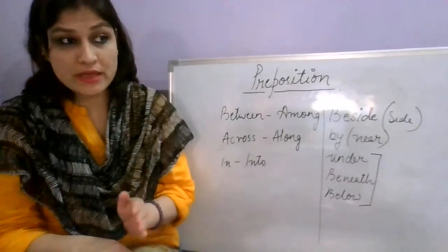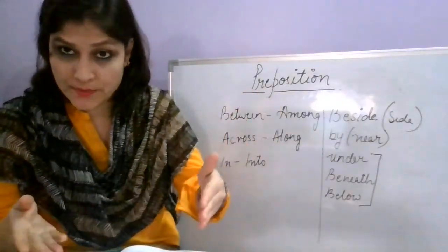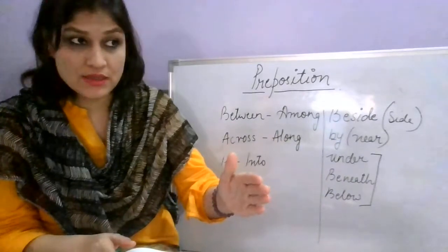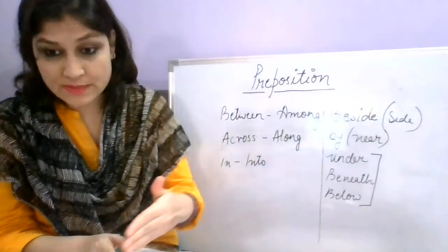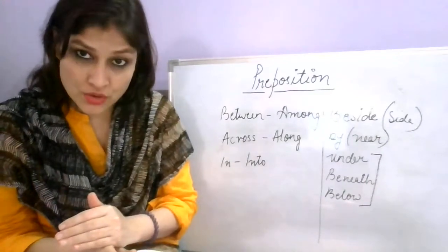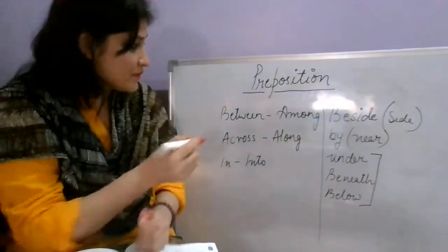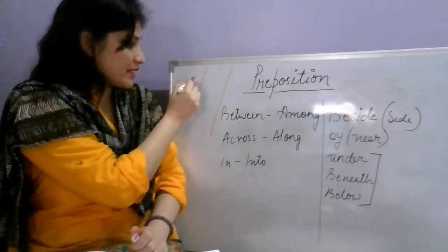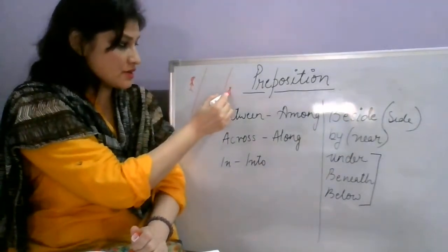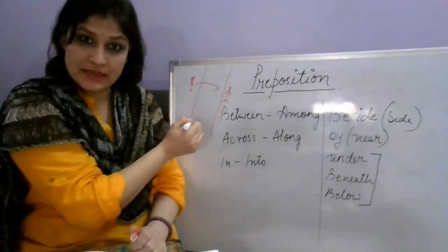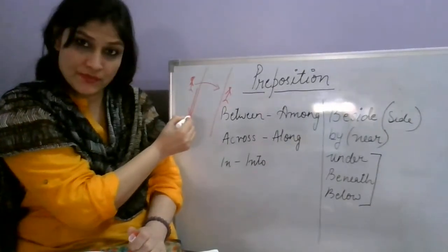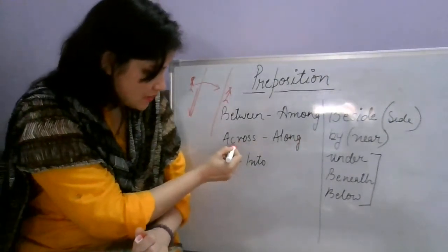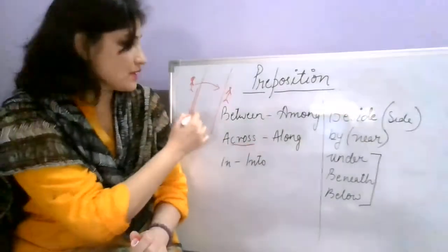Across and along: imagine there is a road. When you cross that road it becomes 'across', but when you walk by the side of the road it becomes 'along the road'. To help visualize: if this is the road and you are crossing it, that is 'across the road'; walking parallel to it is 'along the road'. So across means going to that side, and along means going by the side.